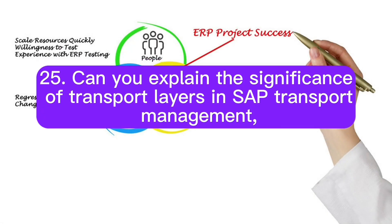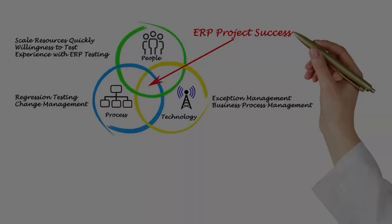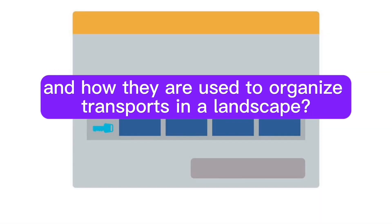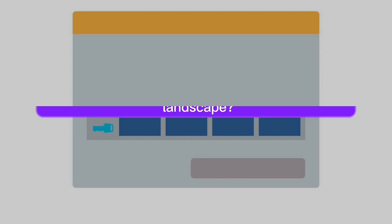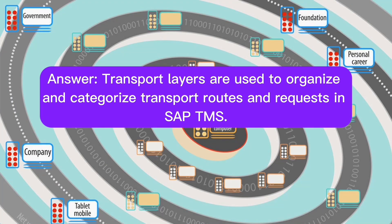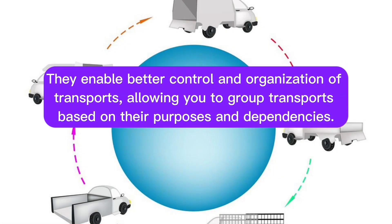Question 25: Can you explain the significance of transport layers in SAP transport management, and how they are used to organize transports in a landscape? Answer: Transport layers are used to organize and categorize transport routes and requests in SAP TMS. They enable better control and organization of transports, allowing you to group transports based on their purposes and dependencies.